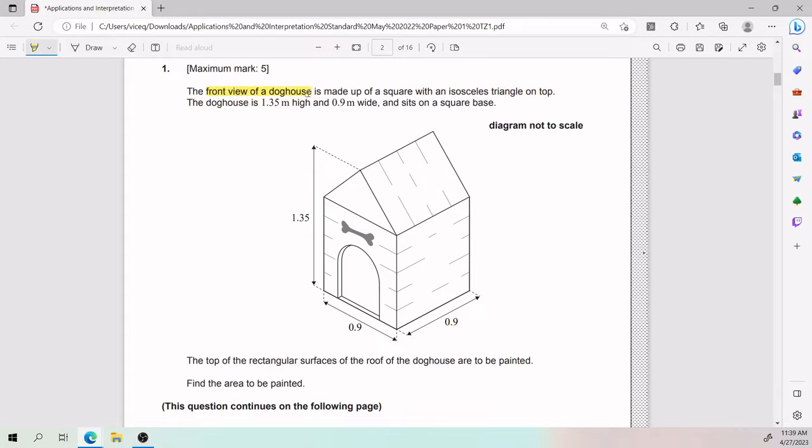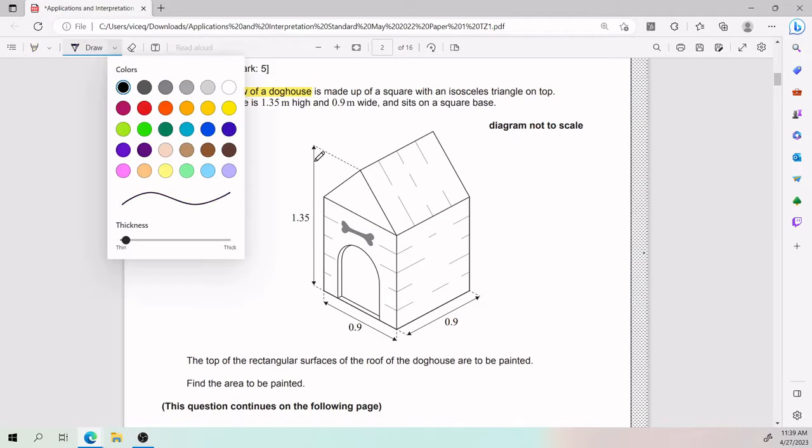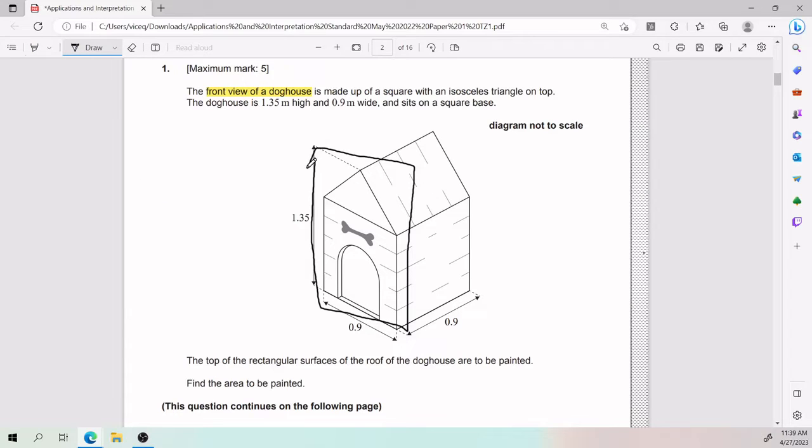So, let's read it again thinking in buzzwords. The front view of a doghouse, so front view makes reference to this guy here. This is what I see on the front view of the doghouse, is made up of a square. So that tells me that this guy here is a square. Let's apply what it just told us. So the fact that it's a square means that this side here is 0.9, makes this side here 0.9, makes this side here 0.9, makes this height here 0.9.